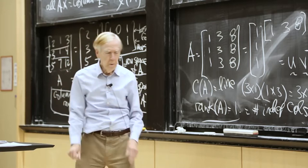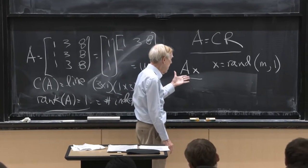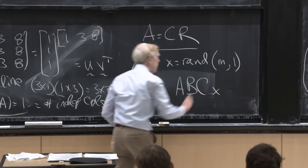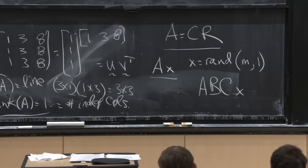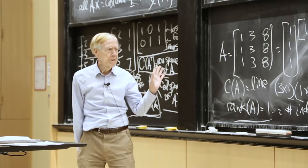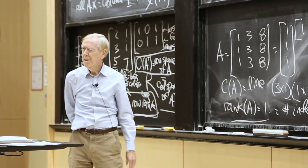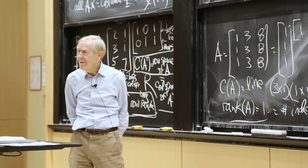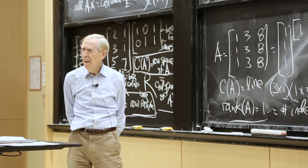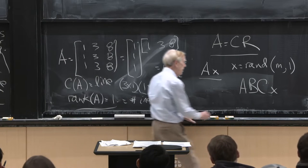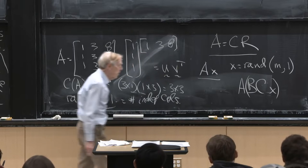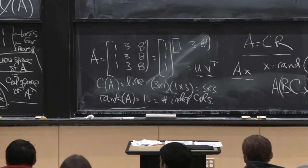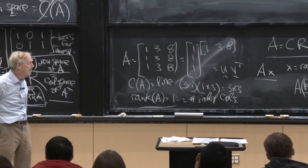Here's a quick question: is A·B·C·x in the column space of A? Yes — because A·B·C·x is A times something. Putting parentheses in the right place is the key to linear algebra.